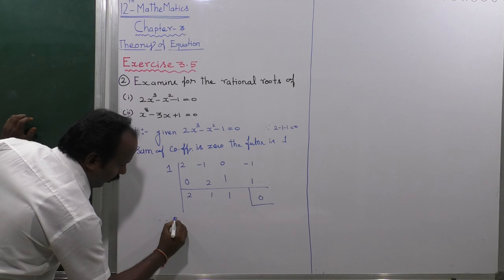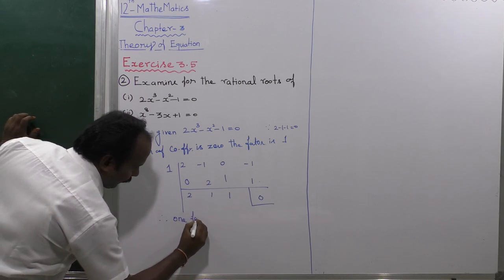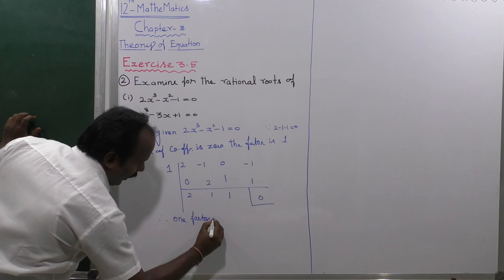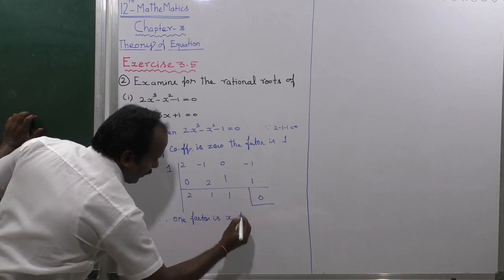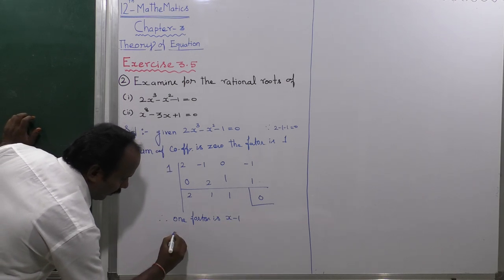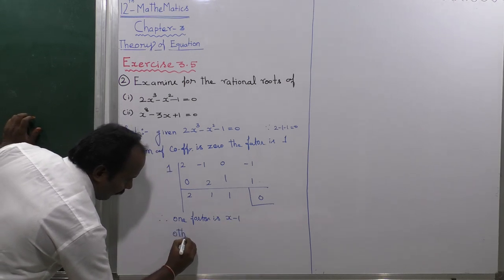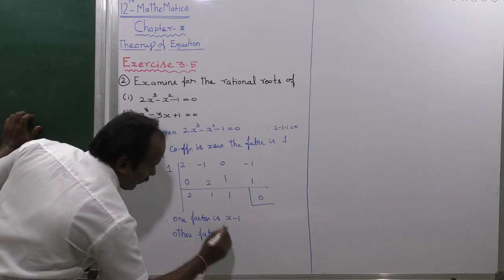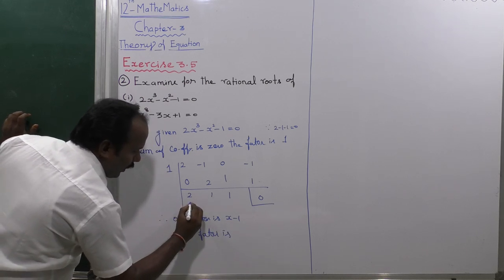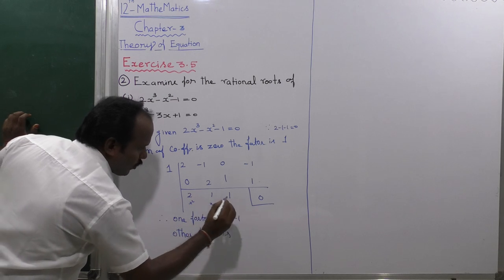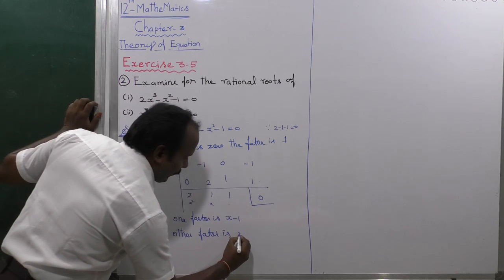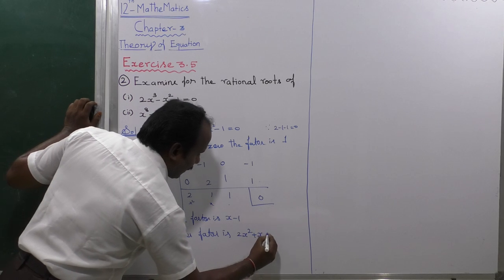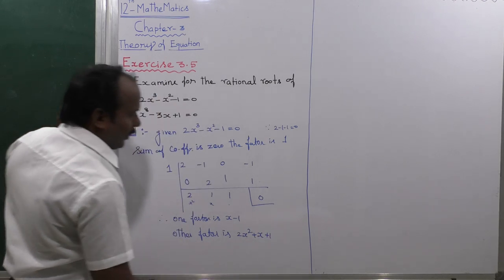Therefore one factor is x minus 1. The other factor, reading the remaining coefficients, is 2x² plus x plus 1.